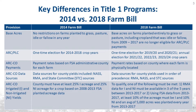Now I'll discuss some of the key differences in Title I commodity programs in the 2014 and 2018 Farm Bills. Under the 2018 Farm Bill, farms planted entirely to grass or pasture, including cropland that was idle or fallow from 2009 to 2017, are no longer eligible for ARC and PLC payments. If one acre of one covered commodity was planted in any year between 2009 to 2017, the farm will remain eligible for ARC and PLC payments.